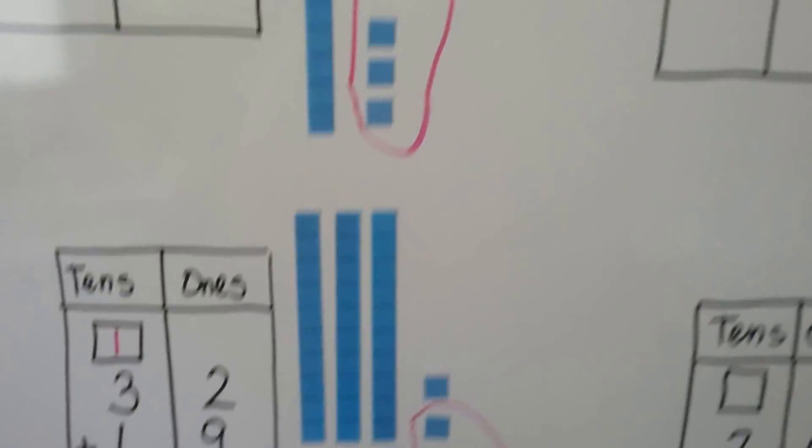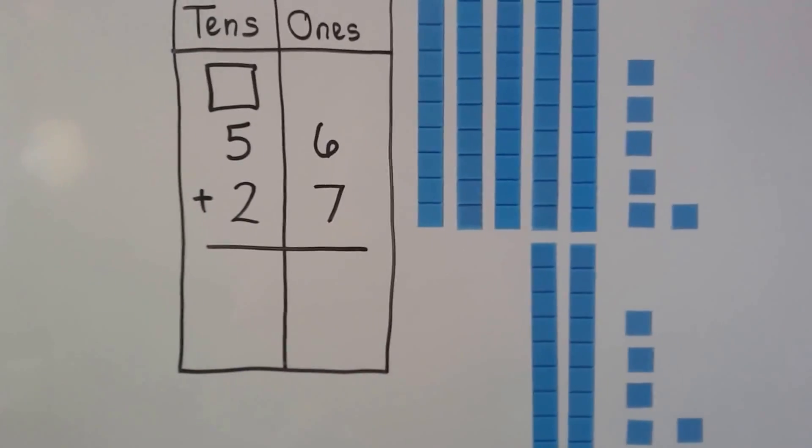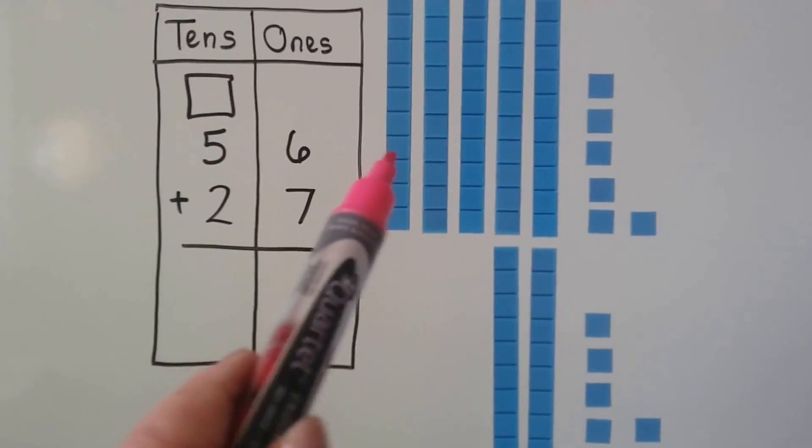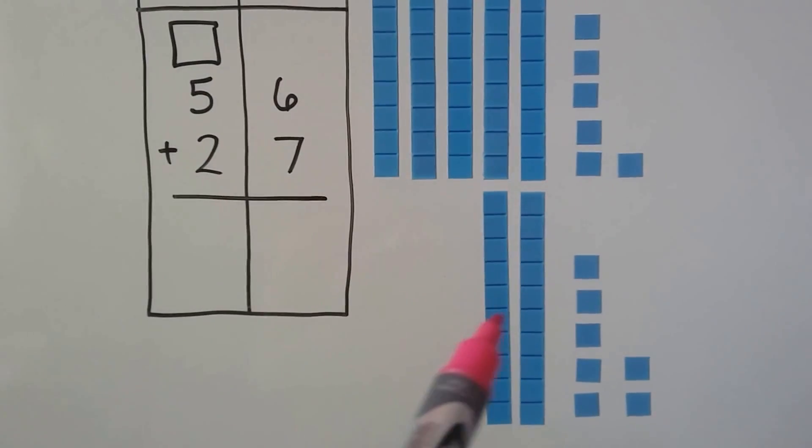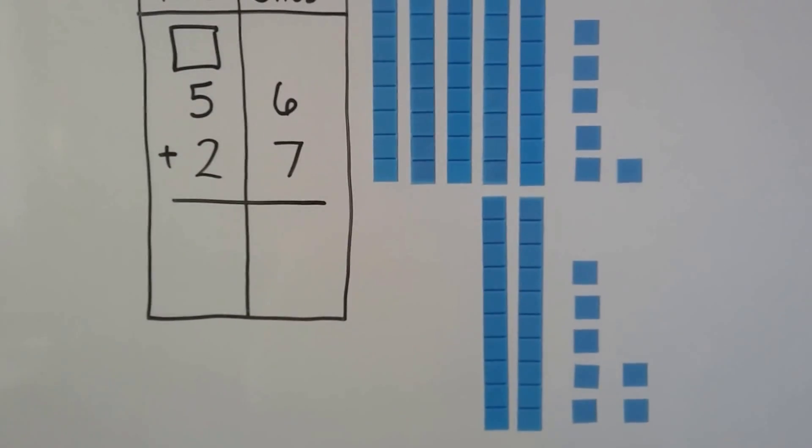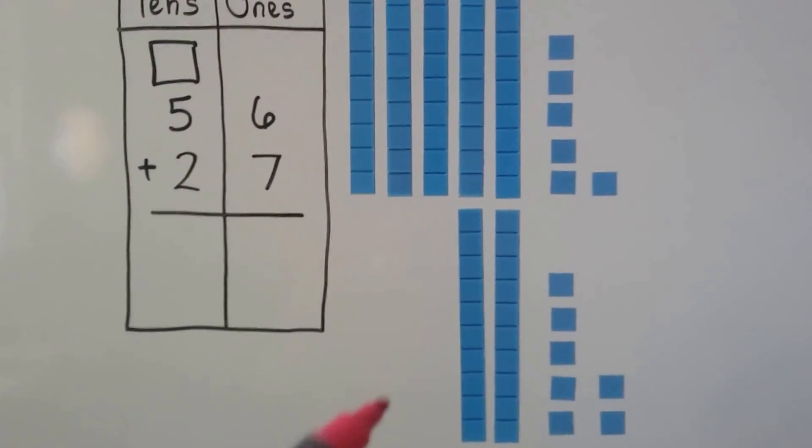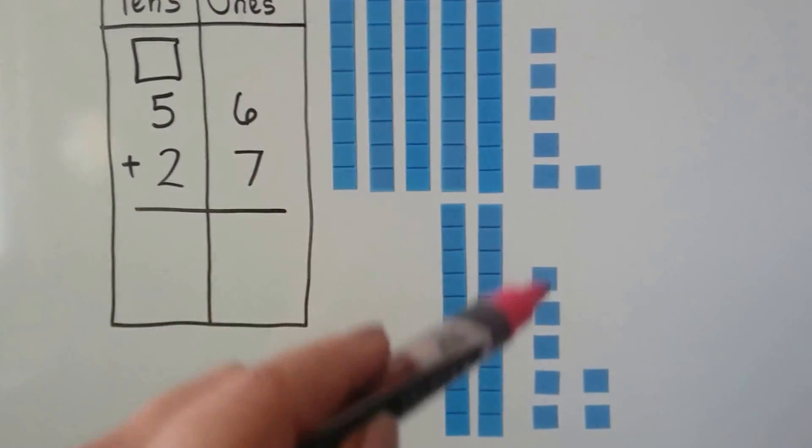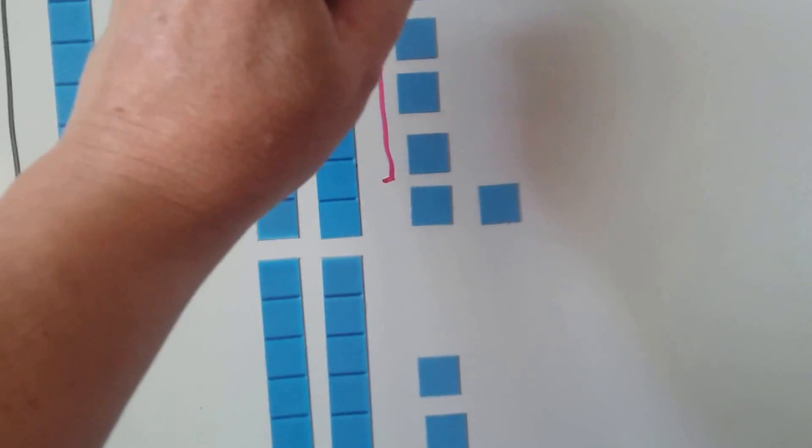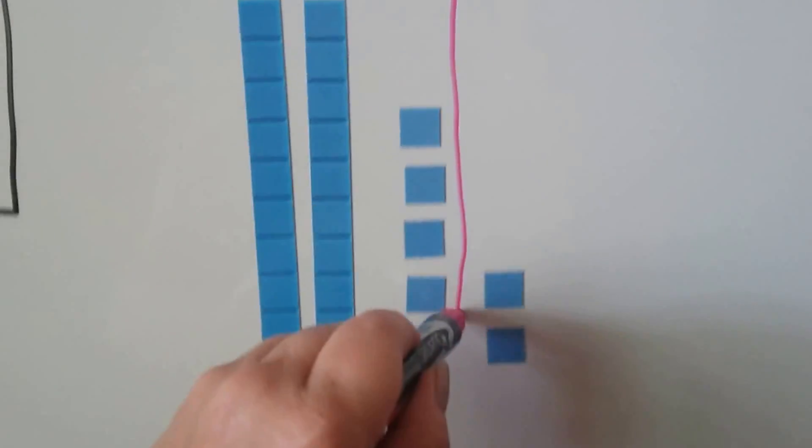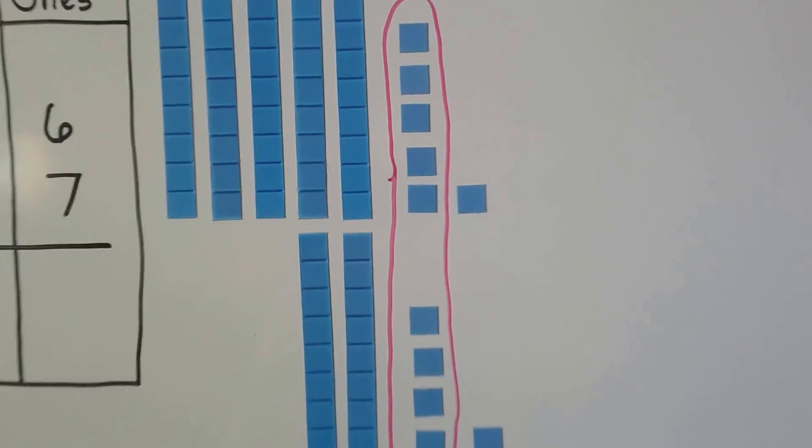Let's try it again. We've got 56 plus 27. For 56, we have 5 tens and 6 ones. For 27, we have 2 tens and 7 ones. We're going to circle some ones to see if we can make a new 10. We have 5 here and 5 here. So we know that 5 plus 5 is 10. We can circle this 5 together with this 5 and make a 10.